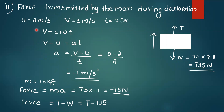For the deceleration phase: initial velocity is 2 m per second, final velocity is 0 m per second, time t equals 2 seconds. Using v equals u plus at, acceleration a equals v minus u divided by t, that is 0 minus 2 divided by 2, equal to minus 1 m per second squared.